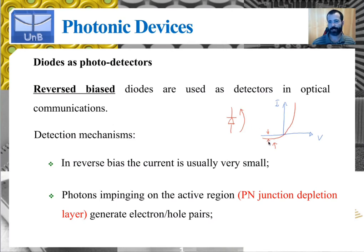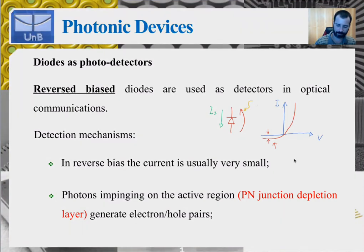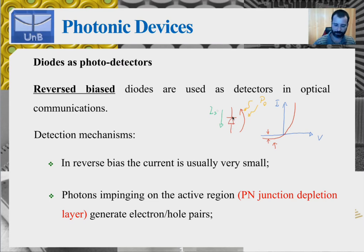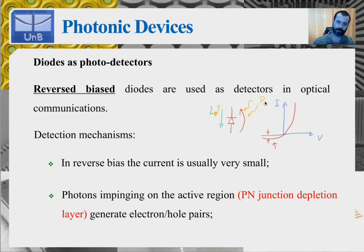Without shining light on the device, you have a very small reverse current flowing — the saturation current. As you illuminate the device, specifically the depletion layer or the active region, additional electrons and holes are generated, increasing this reverse current in proportion to the optical power absorbed by the device.